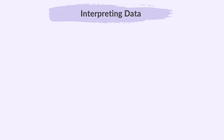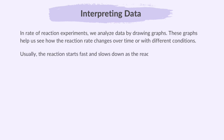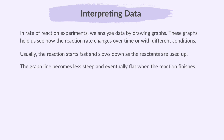Finally, let's take a look at how we can interpret data from rate of reaction experiments. In rate of reaction experiments, we analyze data by drawing graphs. These graphs help us see how the reaction rate changes over time or with different conditions. Usually, the reaction starts fast and slows down as the reactants are used up. The graph line becomes less steep and eventually flat when the reaction finishes.